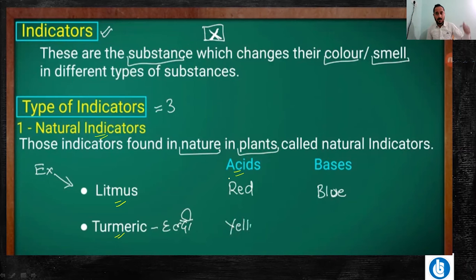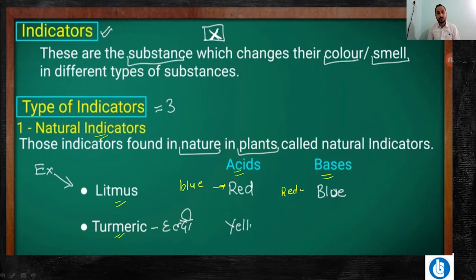If the solution is acidic, we use blue litmus — the blue litmus turns red in acidic solution. And if we talk about the basic solution, the red litmus turns blue in basic solution.